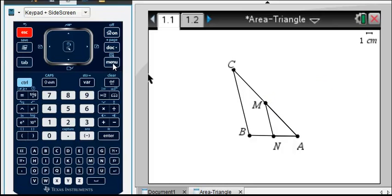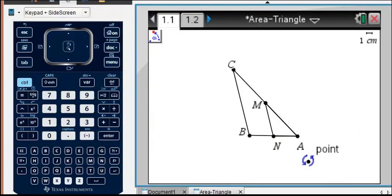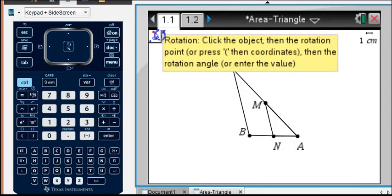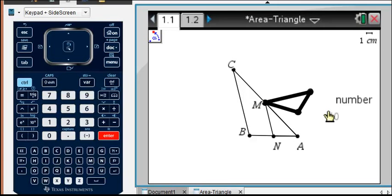Let's do that with Menu, Transformation, Rotation. And we can see that I need to click the object, then the center point, then the angle of rotation. So I'm going to click the triangle, the point M. And I think I'm going to just rotate through 60 degrees for right now. So I have this triangle. I haven't rotated the entire distance yet. But it's close.